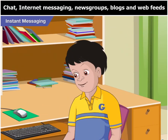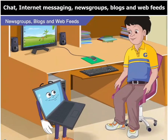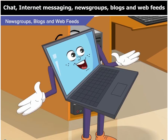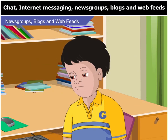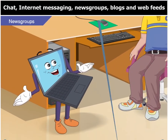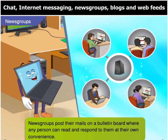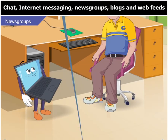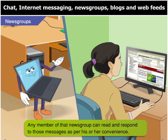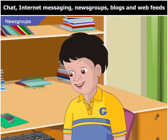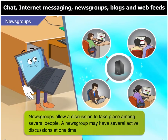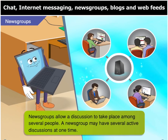Toggle, which other services can we use to communicate over the internet? Some other services through which you can communicate with others are news groups, blogs and web feeds. Way over my head — none of those terms ring a bell. Don't worry, I'll explain these to you one by one. News groups are similar to email, but these messages are not sent to your mailbox. In news groups, the messages are posted on a bulletin board. If you are a member of that news group, you can read and respond to those messages at your convenience. By this way, news groups allow discussions to take place among several people. One can express one's views on an issue, current affair, or suggest a solution to the problem presented. A news group may have several discussions going on at the same time.